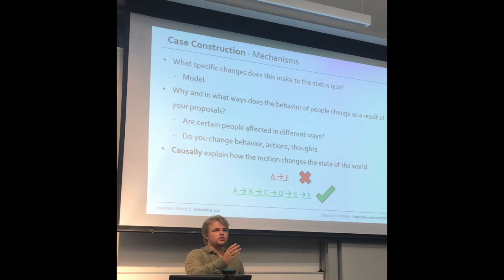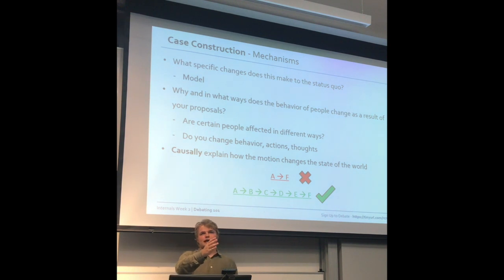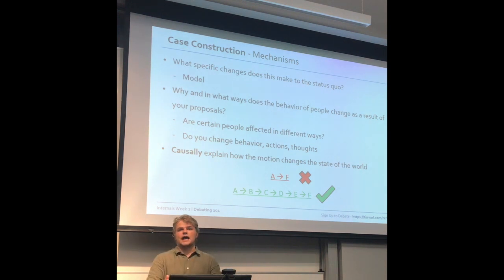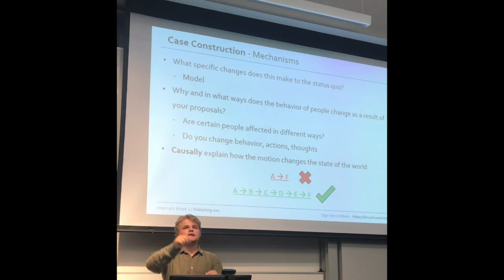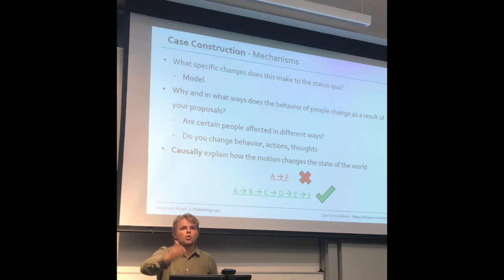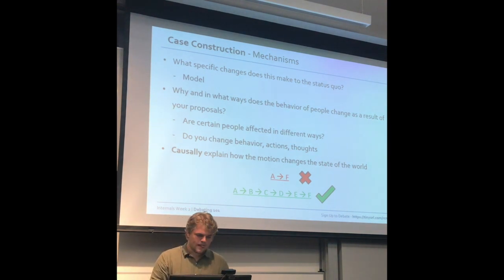A good way to think about this when writing your points is: if you've just made a conclusion claiming some sort of benefit — like 'we've solved racism, we did it' — ask yourself why is it true that we have done this? If everything doesn't add up in what you've said, you probably need to do more work with your mechanism to explain how you accomplish the benefit you get.